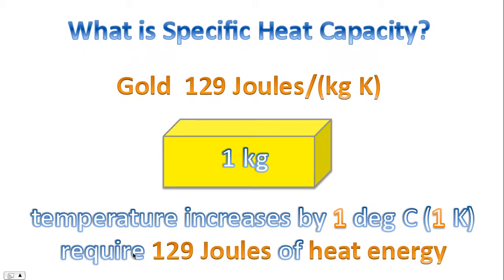129 joules per kilogram Kelvin means that if we want to increase the temperature of a bar of gold that weighs one kilogram, and we want to increase that temperature by one degree Celsius, we'll need 129 joules of heat energy.